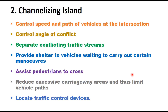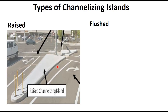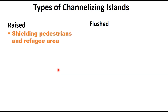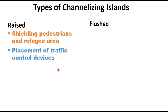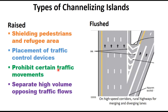Channelizing islands can be either in raised form — that is, physical form — or in flushed form. Raised channelizing islands have their height above the pavement surface and serve as shielding for pedestrians and as a refuge area. They are also provided for placement of traffic control devices, to prohibit certain traffic movements, and to separate high-volume opposing traffic flow.